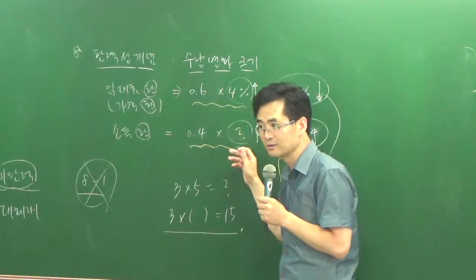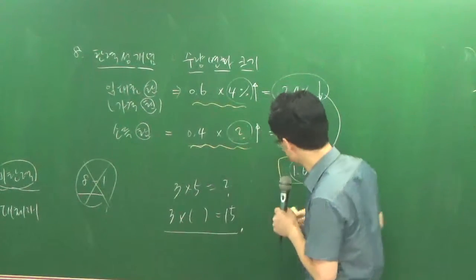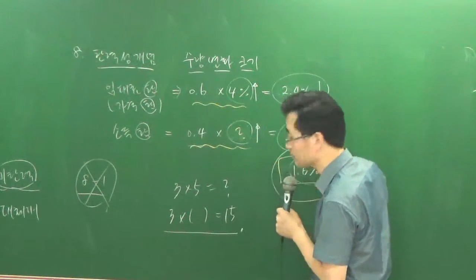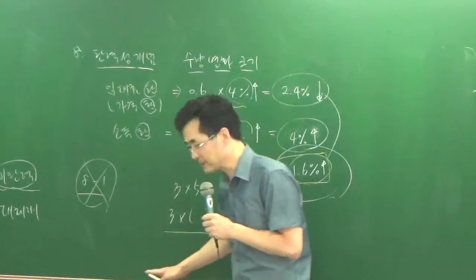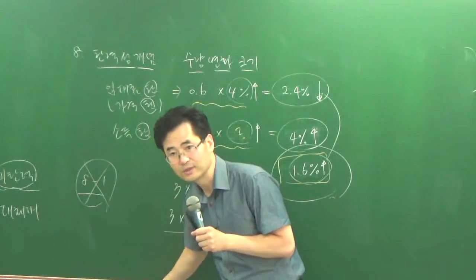이게 3 곱하기 5는 이렇게 묻는 거 하고요. 3에다가 뭘 곱하면 15가 되니 이게 다른 거예요. 이게 수학에서 한 단계 난이도가 더 높은 거다 이 말이에요. 그래서 그 구조를 알고는 계셔야 돼요. 소득 변화를 묻는 거는 어려운 거예요. 차라리 그 총 결과를 묻는 거는 쉽단 말이에요.